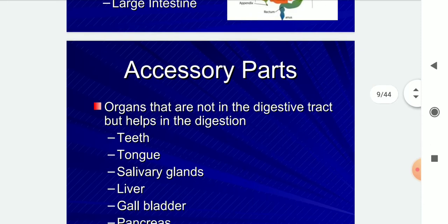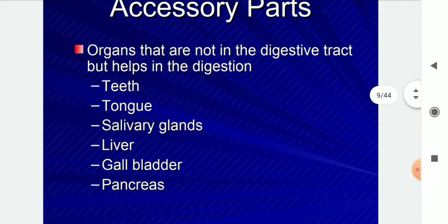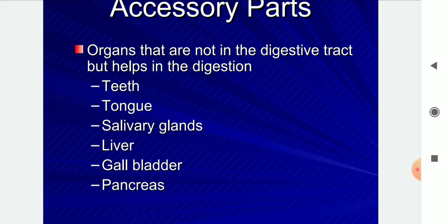The accessory parts are organs that are not in the digestive tract but help in digestion. These are the teeth, tongue, salivary glands, liver, gallbladder, and pancreas.